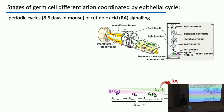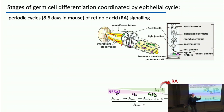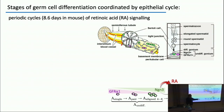All stages of germ cell differentiation are coordinated by a periodic retinoic acid cycle. In the mouse, that cycle is around 8.6 days. A key thing it does is transition states which are Neurogenin-3 high into the KIT-positive compartment, regulating that transition from undifferentiated into being on a differentiation path. It also regulates the transition into meiosis and detachment from the basement membrane.